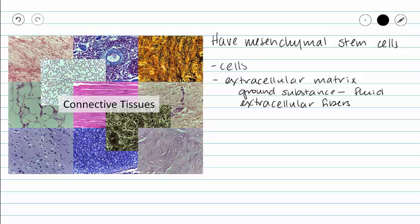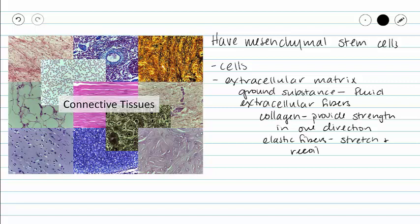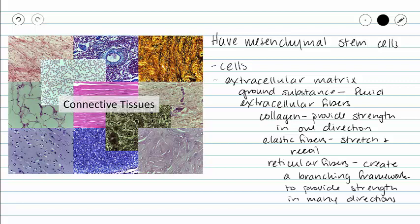Our extracellular fibers come in three different varieties. We have collagen fibers, which provide strength in one direction. We have elastic fibers, which provide stretch and recoil. And we have reticular fibers, which create a branching framework to provide strength in many directions. Collagen fibers generally stain pink, elastic fibers generally stain dark purple, and reticular fibers either stain a dark brown-black or light blue.